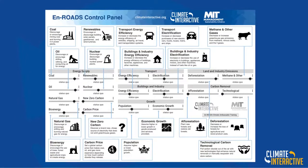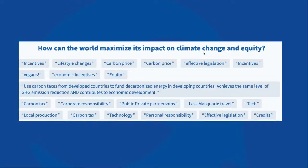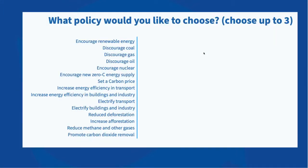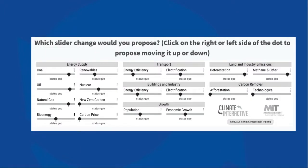Next, surface from people what's on their minds about addressing climate change. You can give them a piece of paper from our website listing all the possible things they can consider. You could ask a broad question like: 'What approaches should we take? How can the world maximize its impact on climate change and equity?' You could run a poll of all 18 possibilities to see what everyone's thinking, or show the interface and let people point and click to select what they'd like to do.